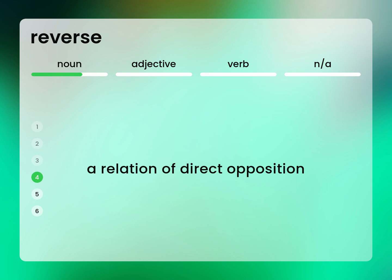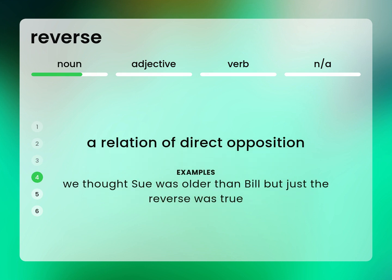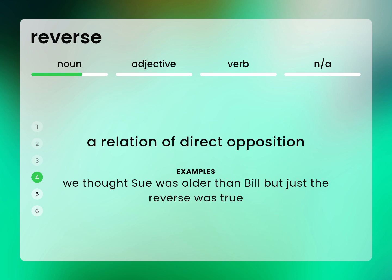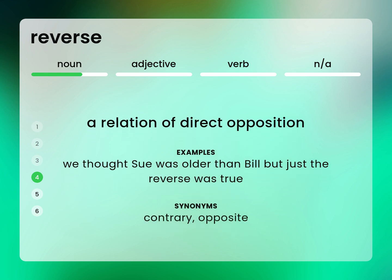A relation of direct opposition. We thought Sue was older than Bill but just the reverse was true. Contrary. Opposite.